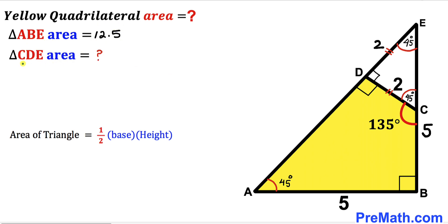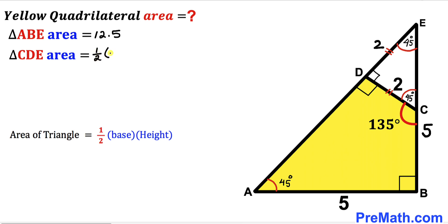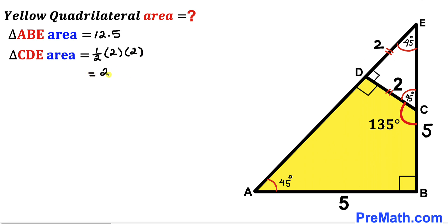Next, we calculate the area of the small right triangle CDE using the same formula: Area = ½ × base × height. The base is 2 units and the height is 2 units. So the area of triangle CDE = ½ × 2 × 2 = 2 square units.